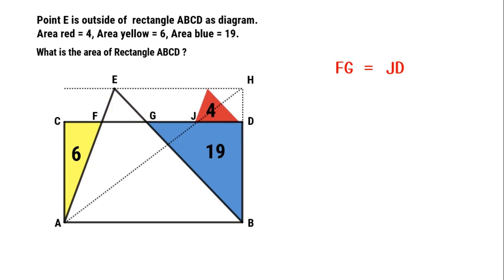So the area of triangle HJD equals the area of triangle EFG, which is 4 units. The area of triangle AFJ equals 19 units.